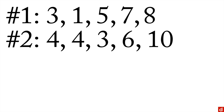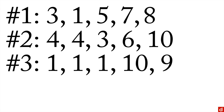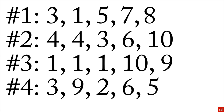My second sample is four, four, three, six, and ten — so I got the four twice, and I didn't get the one, two, five, seven, eight, or nine. The third sample, I got three ones, and a ten and nine — so we're way at the ends there. And then my fourth sample, I got a three, nine, two, six, five. All of these were drawn at random from the exact same population, but you can see that the samples are very different. That's the sampling variability, or the sampling error, and that's what makes inference a little trickier.